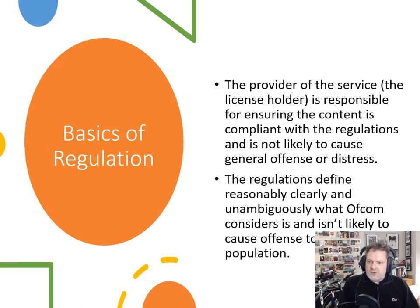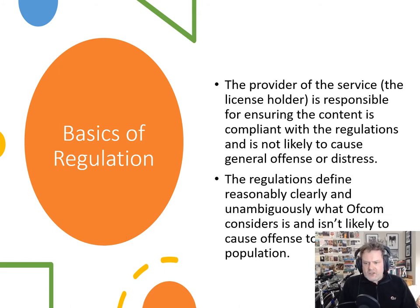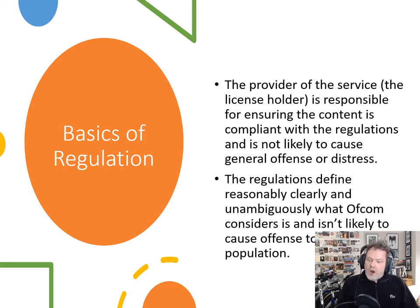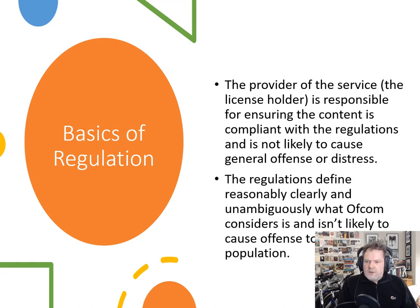The basic principle of regulation in the UK is that the person who holds the licence for a radio station or TV station is responsible for ensuring that the content they put out is compliant with regulations and not likely to cause general offence or distress. That offence or distress is defined in surveys that Ofcom undertakes and legal rulings given out. Ofcom are the arbiters of that definition, and they base it on regular surveys, case law, and regularly updated information to determine what causes offence in the general population. This changes over time, but only slowly.